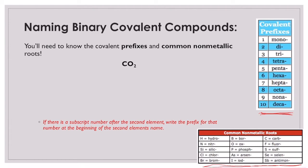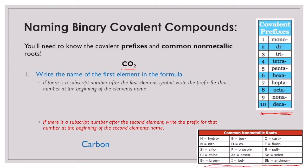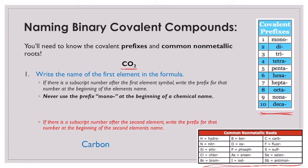Let's get started with the compound CO2 - we need to give this a name. Step one is to write the name of the first element in the formula, which is carbon. Then I need to look at the formula: if there's a subscript number after the first element symbol, I want to use a prefix for that number at the beginning of the element's name. One rule is that we never use the prefix 'mono' at the beginning of a chemical name, so because there's only one carbon, I just leave it as carbon.